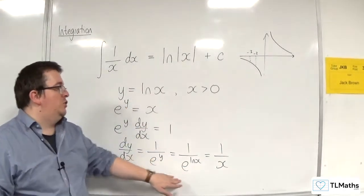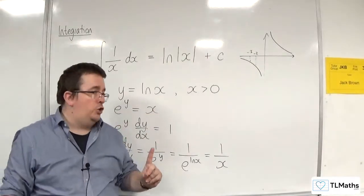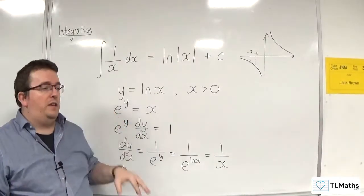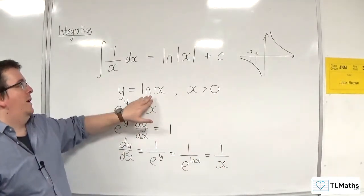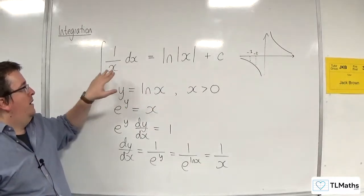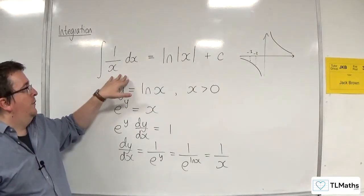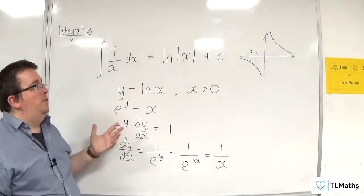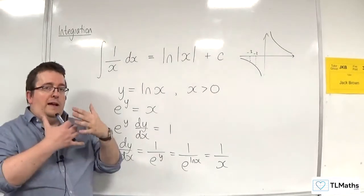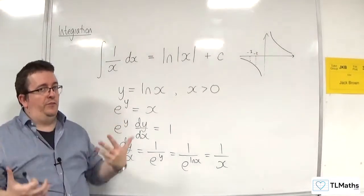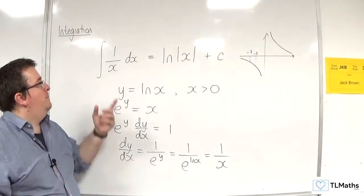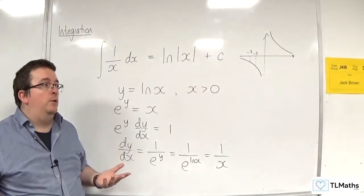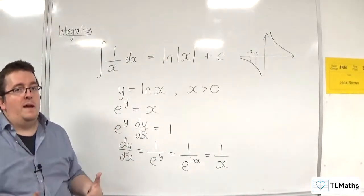So 1 over x has to integrate to log x. But there is that condition that x had to be greater than 0 in order for you to be able to go from there straight to there. When we are integrating 1 over x, we must get used to putting these modulus signs around the x so that you are clear that the logarithm can only take positive values of x. Because we know 1 over x is defined not just for x is greater than 0. It's defined for anything apart from 0.